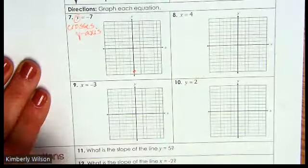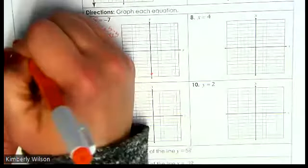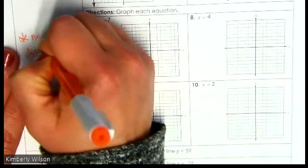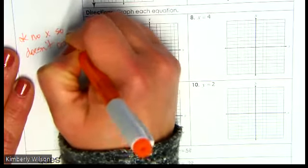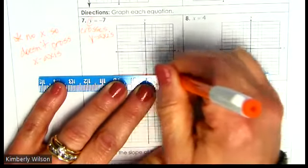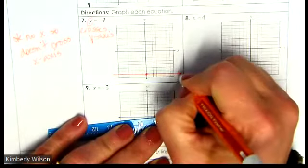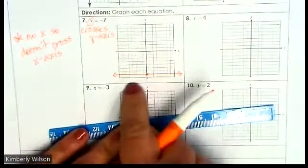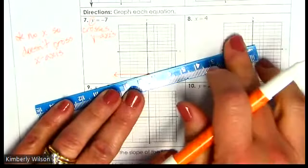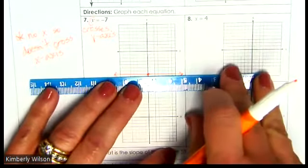Since it's just y equals, there's no x, so it doesn't cross the x-axis. For it to not be able to cross the x-axis, it has to be a horizontal line. For this line to never cross the x-axis, it has to be horizontal, because if it has any form of a slant, it's eventually going to cross that x-axis. It has to be the horizontal line.